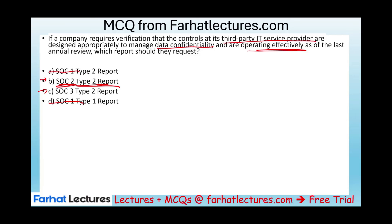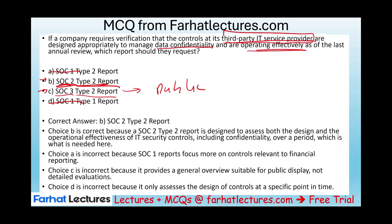Since they're not looking to assure the public, they would ask for a SOC 2 Type 2 report. SOC 2 Type 2 is given to the user entity. They want to verify that controls are designed properly to manage confidentiality and are operating effectively — the phrase 'operating effectively' puts you into Type 2. If this third party wanted to issue a report for the public, that would be a different story. But a company assuring themselves that a service organization is doing a good job with data confidentiality would ask for SOC 2 Type 2. Go to Farhat Lectures for additional MCQs. Invest in yourself. Good luck, study hard, and stay safe.